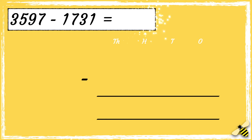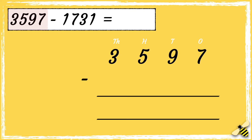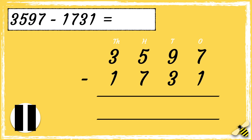Let's have a look at one more: three thousand five hundred and ninety-seven take away one thousand seven hundred and thirty-one. So we have three thousands, five hundreds, nine tens, and seven ones, then we have one thousand, seven hundreds, three tens, and one one. Now that we're set up, we're ready to subtract. Pause the video to give you time to work out the answer. Press play when you're done.